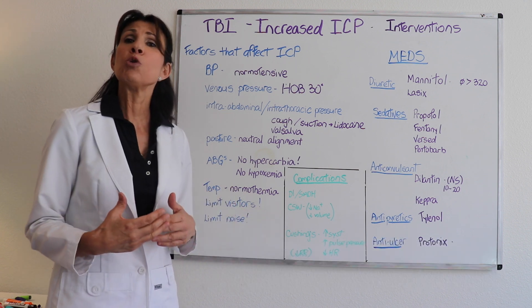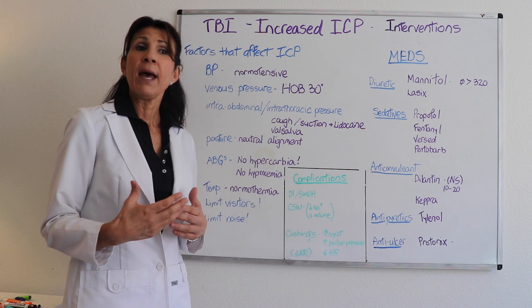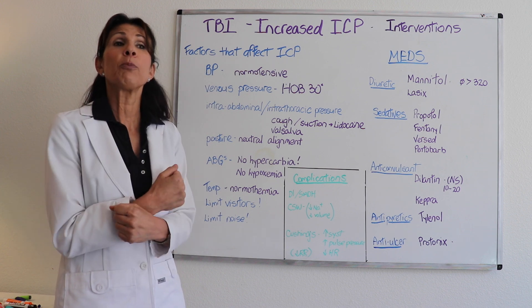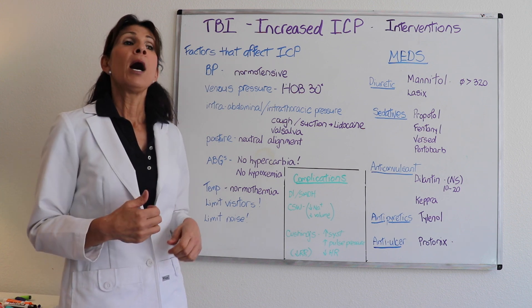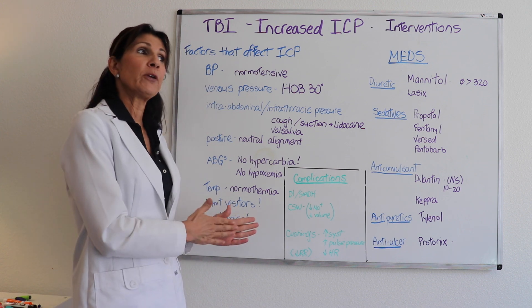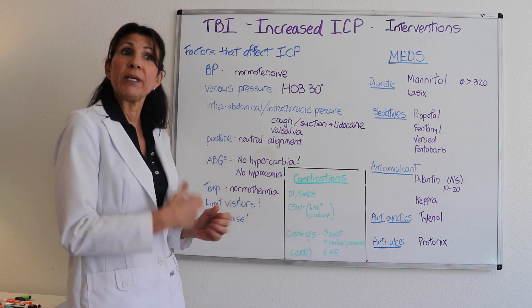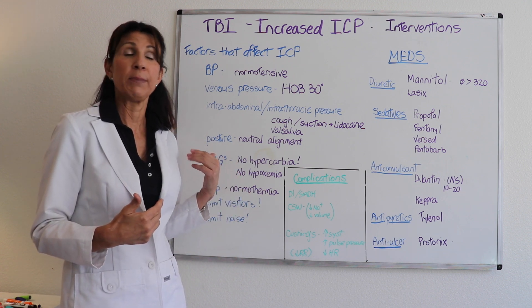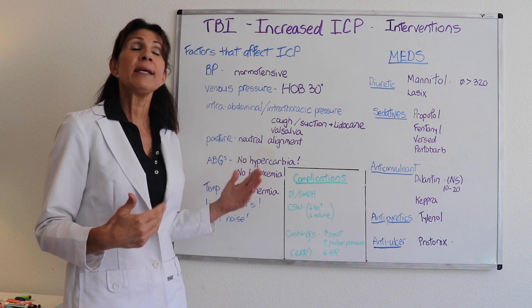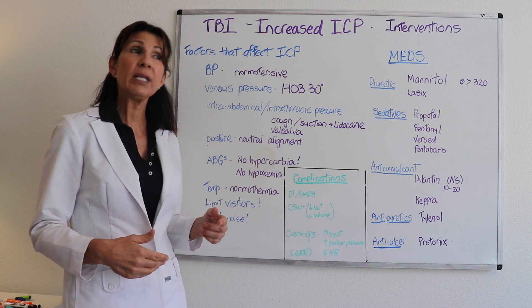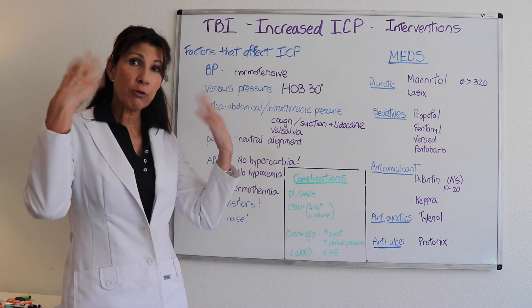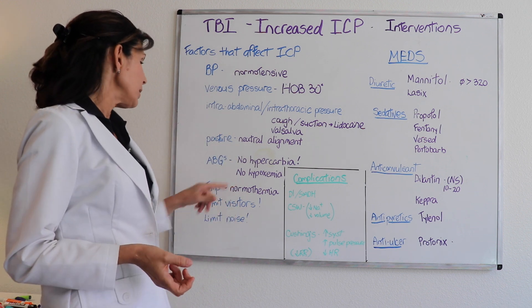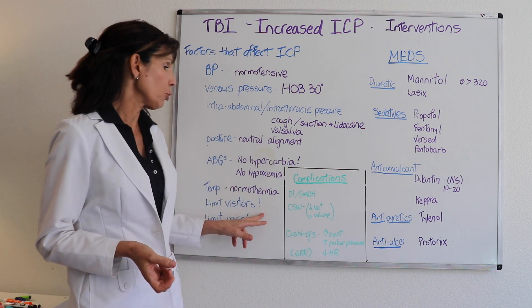Temperature — keep the patient normothermic. Don't let them have a fever, as this will increase intracranial pressure. Also, don't let their body temperature go too low, because shivering will cause an increase in ICP. Anything that increases brain metabolism is going to increase blood flow to the brain and increase ICP, so keep normothermic.